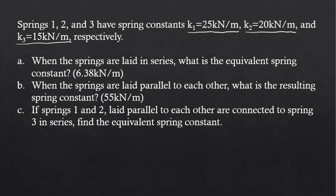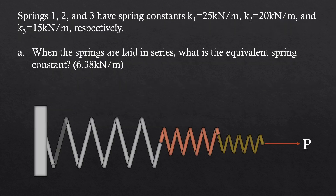We have 3 springs with their respective spring constants: k1 equal to 25 kN per m, k2 equal to 20 kN per m, and k3 equal to 15 kN per m. Let's first try to solve letter A: when the springs are laid in series, what is the equivalent spring constant?